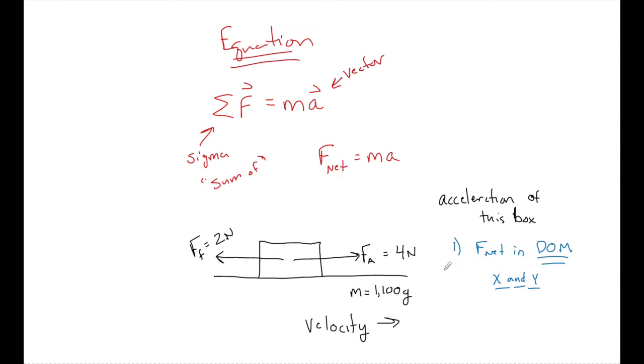Now, this is a vector. And whenever we deal with velocities and vectors, we need to call one side of the vector positive and the other side negative. So I'm going to call anything over here that moves to the right positive and anything over here that moves to the left negative. So now when I find F net, the sum of the forces, that's going to be equal to four newtons plus a minus two newtons. And once again, it's the sum, but it's minus two because it is going opposite to what I call positive.